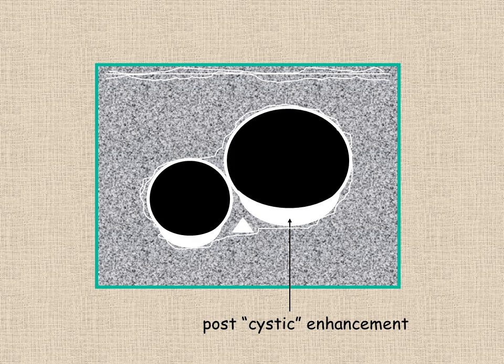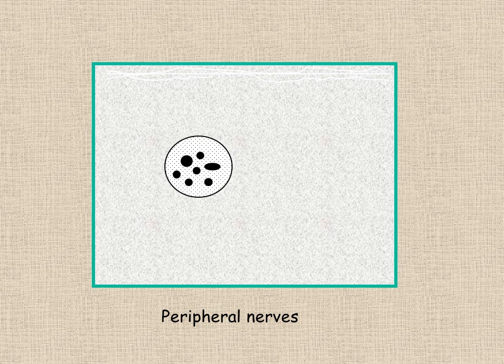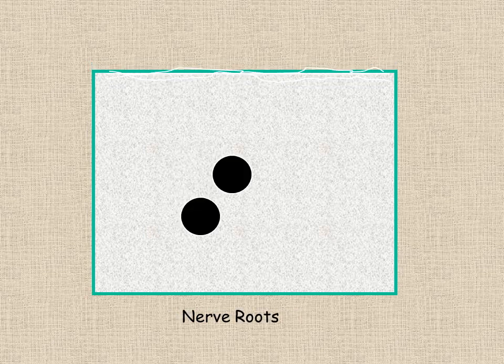One form of artifact to be aware of is peripheral nerves. Peripheral nerves have a characteristic appearance. Nerve roots, as in the interscalene brachial plexus.